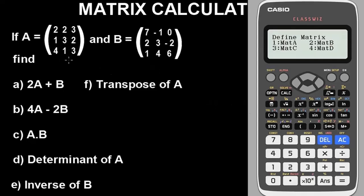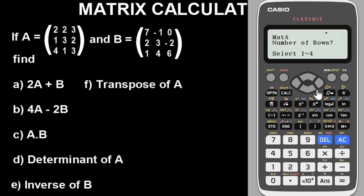We are going to define our matrices — we have matrix A and matrix B. Let's define matrix A first. Select Matrix A (option 1). It will ask you to select the order of your matrix — the number of rows and columns. The rows correspond to the horizontal alignment of your values. Matrix A has three rows and three columns, so select 3 rows and 3 columns.